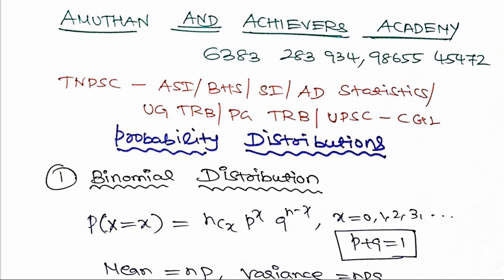I will show you the Probability Distribution. The Probability Distribution has two types: one is the Discrete Distribution, and another one is the Continuous Distribution.